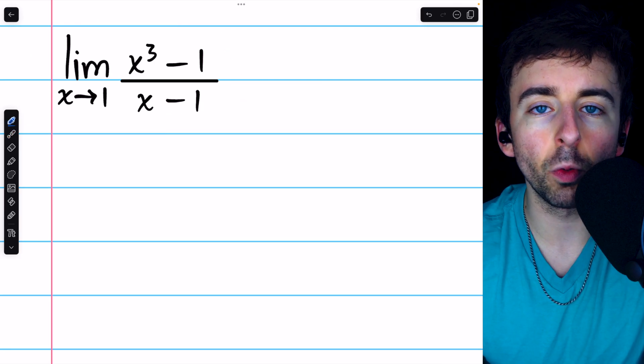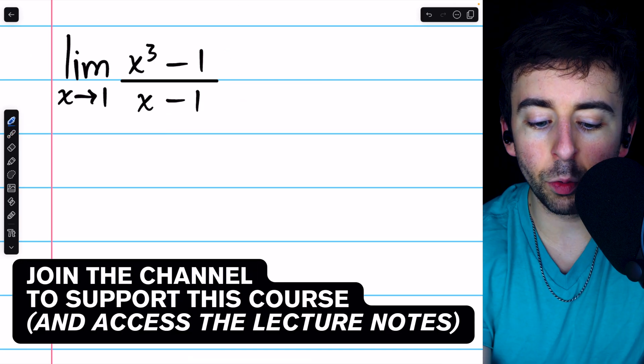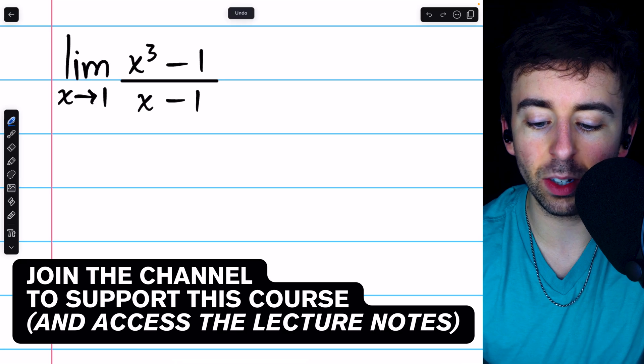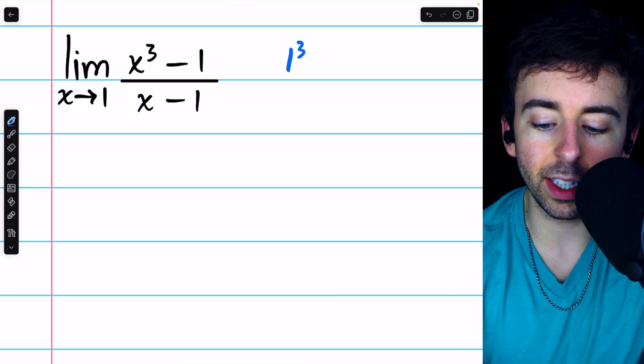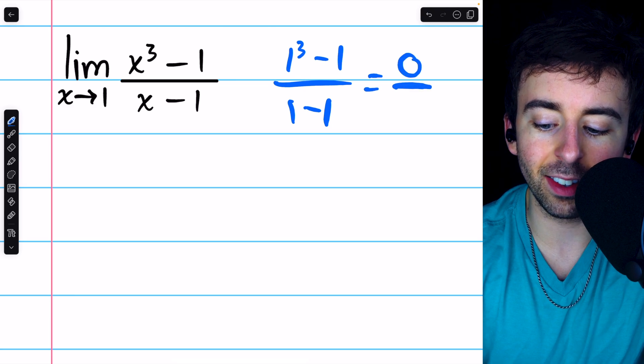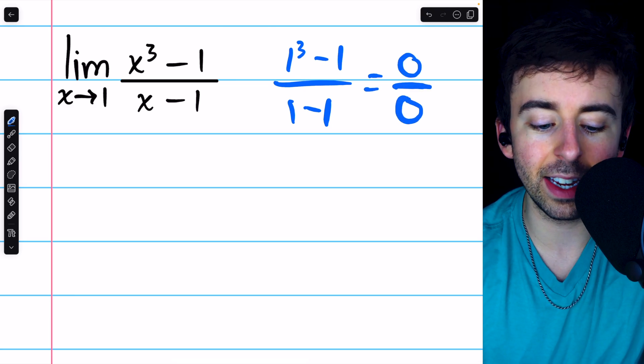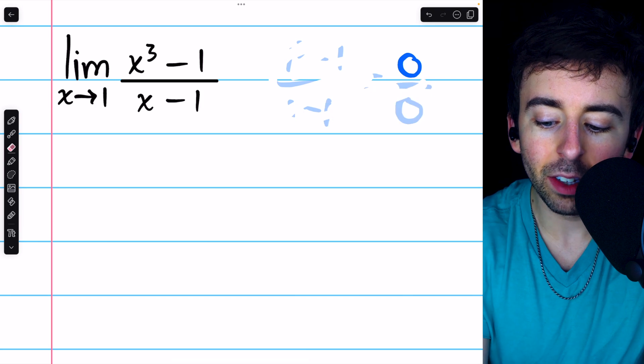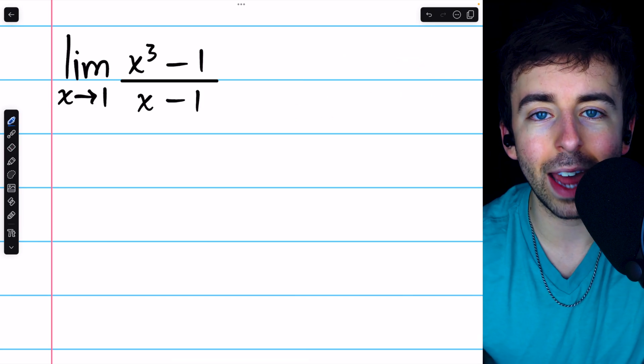This limit can't be evaluated directly by substitution. If we were to try plugging in x equals 1, we would get 1 cubed minus 1 divided by 1 minus 1. That's 0 over 0, which is indeterminate. It doesn't tell us anything about the limit, so we need to use a different strategy.